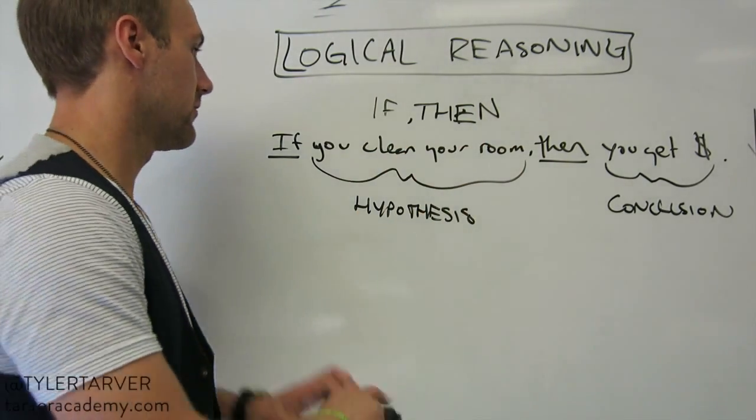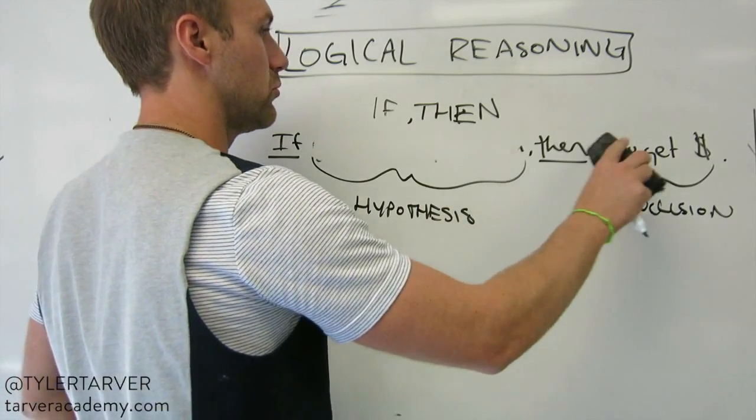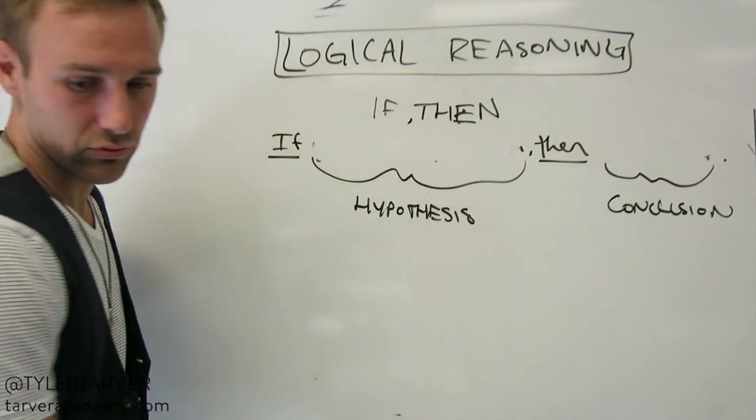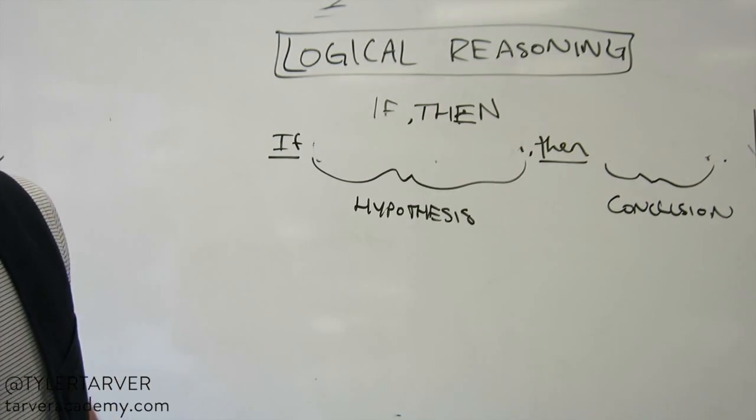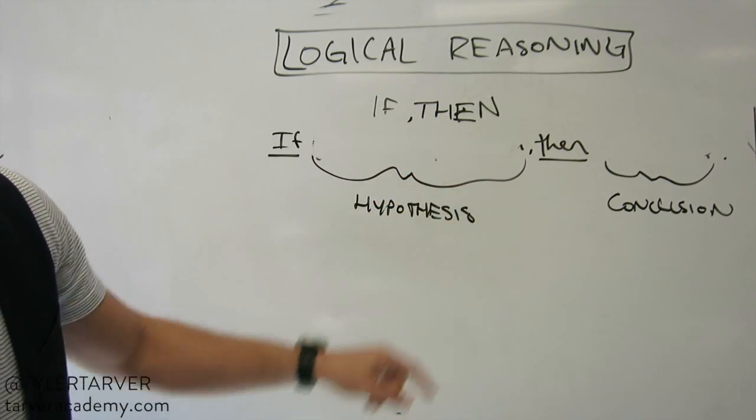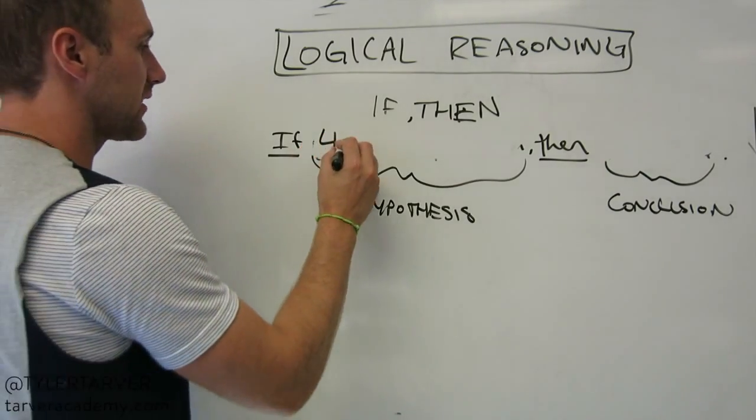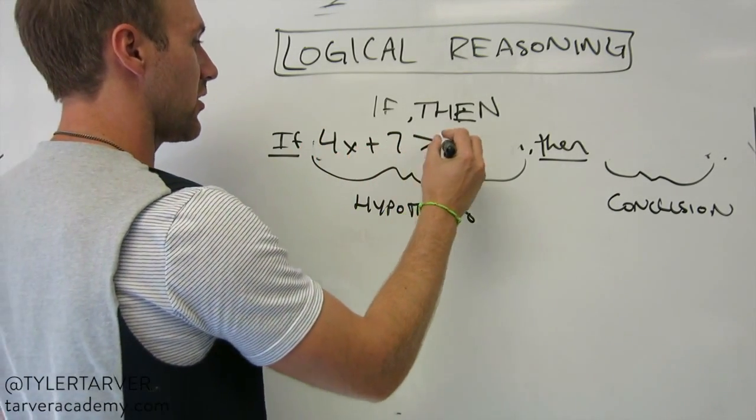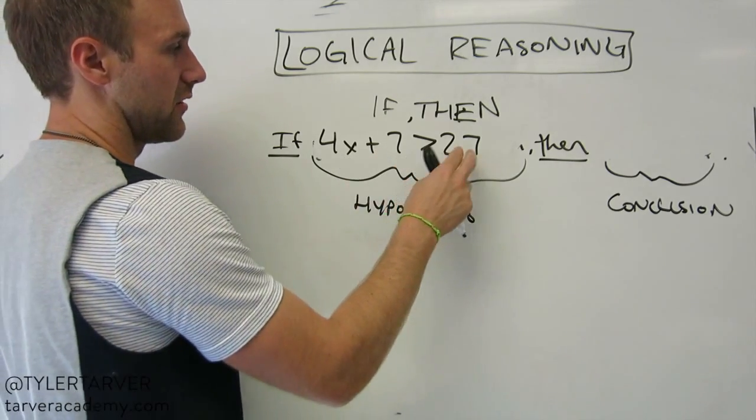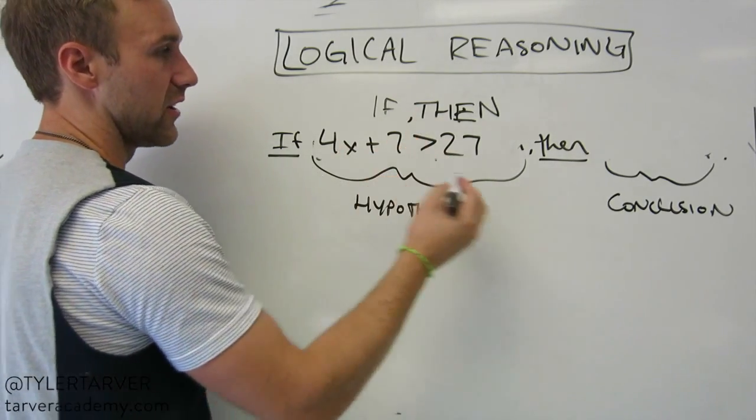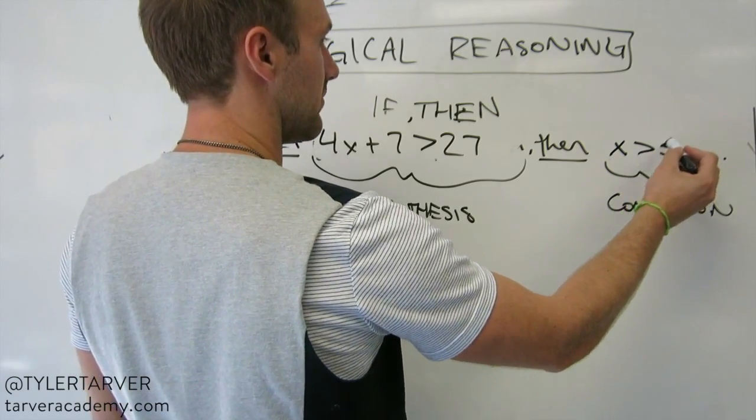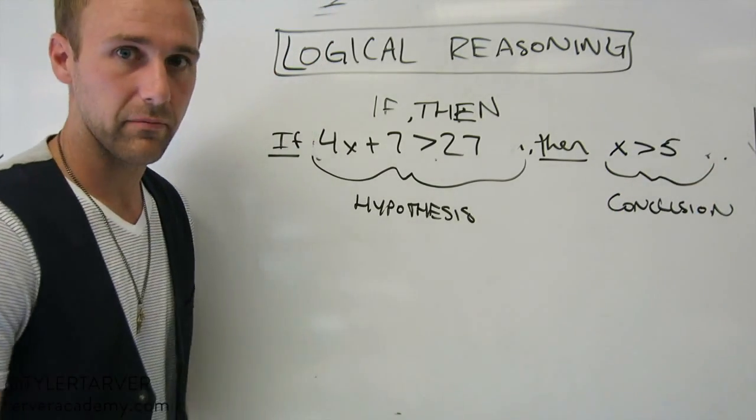Let's try it with the math version, okay? Let's say if... let me see. Don't lose your patience, child. 4x plus 7. If 4x plus 7 is greater than 27, then what? Well, I don't know. Let's work it. Let's see. You subtract 7. That's 20 divided by 4. So it's 5. Then x is greater than 5. Okay? Cool.